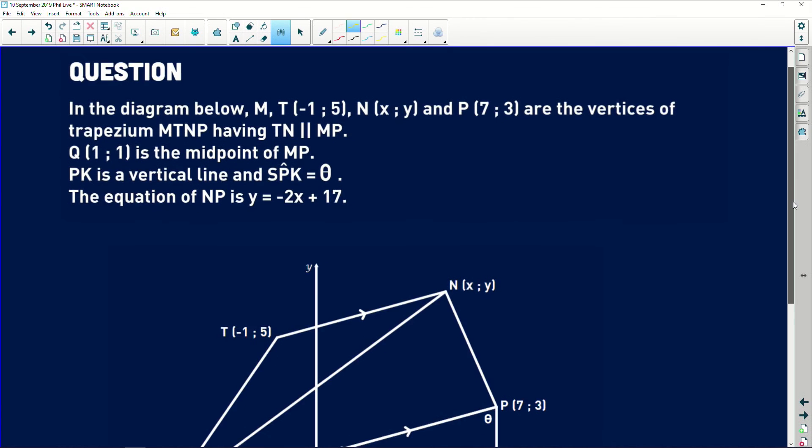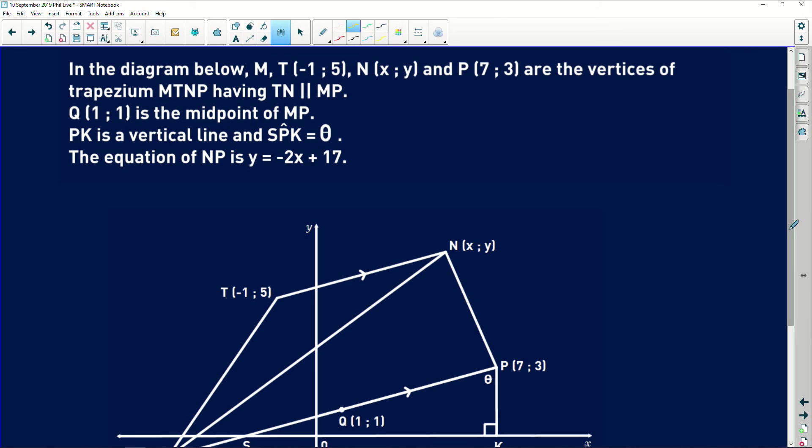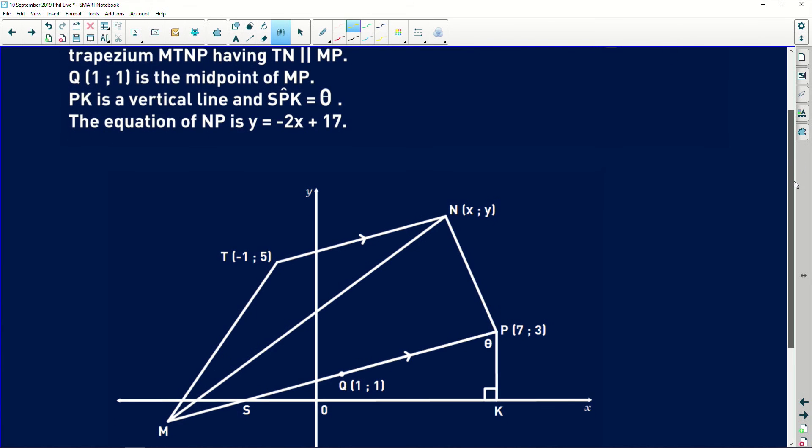Points M, T at negative 1.5, N at X and Y, and P at 7 and 3 are the vertices, fancy word for corners, of the trapezium MTNP, having TN parallel to MP. Whenever you have a trapezium, one pair of sides is going to be parallel to each other. It also says that the point Q at 1 and 1, in this point here, is the midpoint of MP, very important. PK is a vertical line, also very important because it gives us that lovely right angle over there.